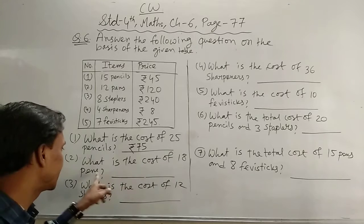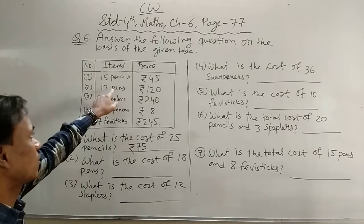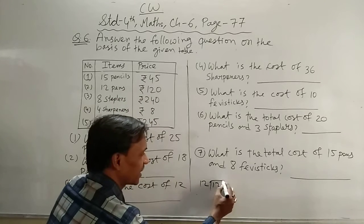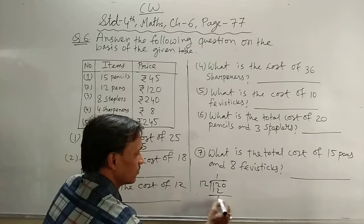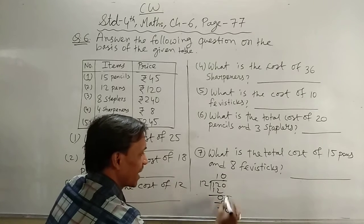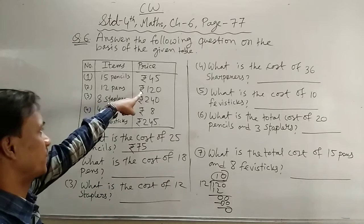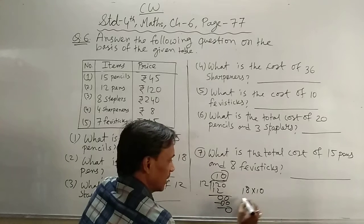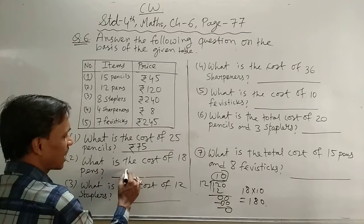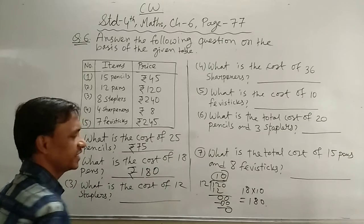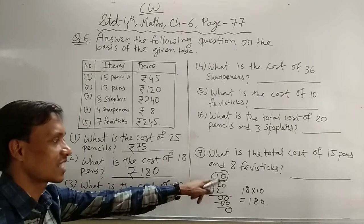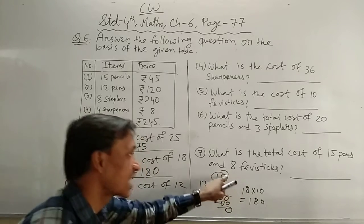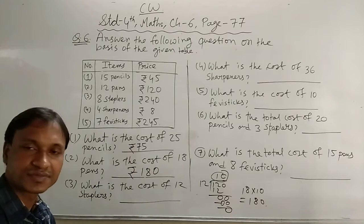Next: What is the cost of 18 pencils? एक pen का cost पहले find करो। 12 pen का cost 120 rupees, तो 120 को 12 से divide करो — 12 ones are 12, 12 zeros are 0, answer 10. तो एक pen का cost 10 rupees। 18 pen का cost: 18 into 10 = 180 rupees। एक pen का cost निकाला और जितना पूछा उस answer से multiply किया।